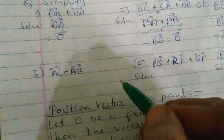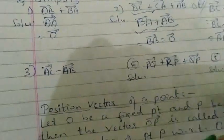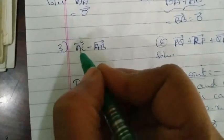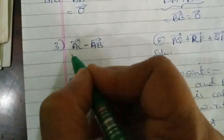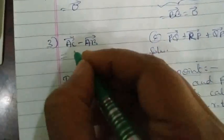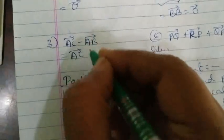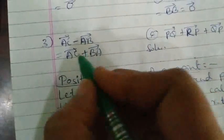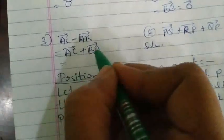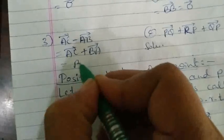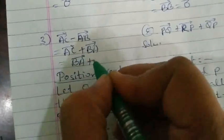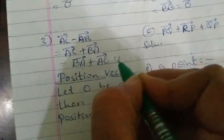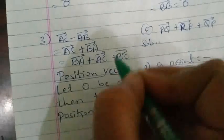The next question: AC vector minus AB vector. First, rearrange it — change the sign of AB to get BA vector. So we have BA vector plus AC vector. A remains the same, and therefore the result is BC vector. That is the answer.